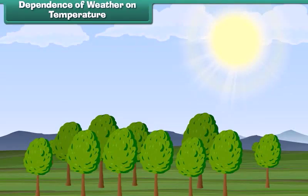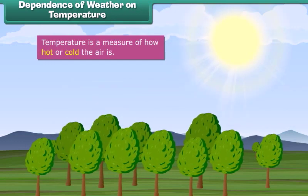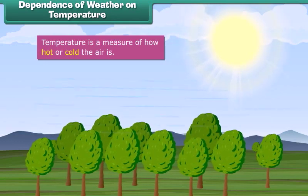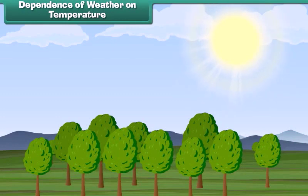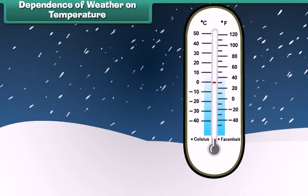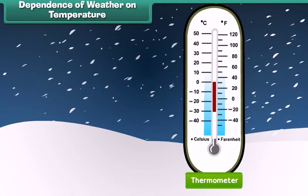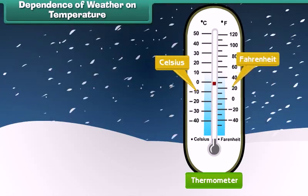Temperature is a measure of how hot or cold the air is. It depends upon the energy it receives from the sun. Temperature is measured with the help of a device called a thermometer and it is calculated in degrees Celsius and degrees Fahrenheit.